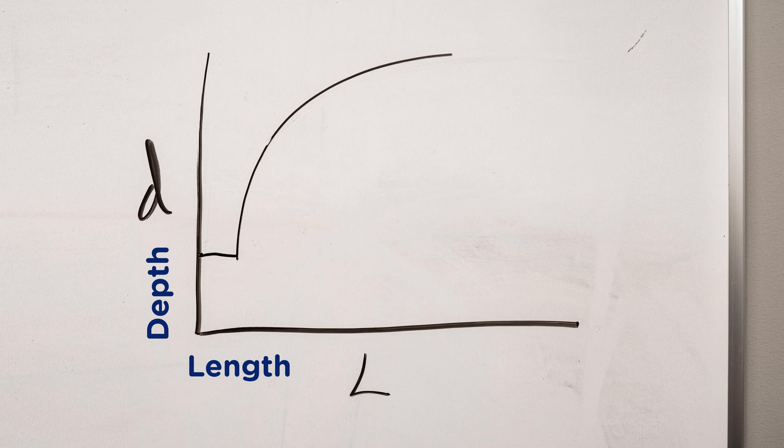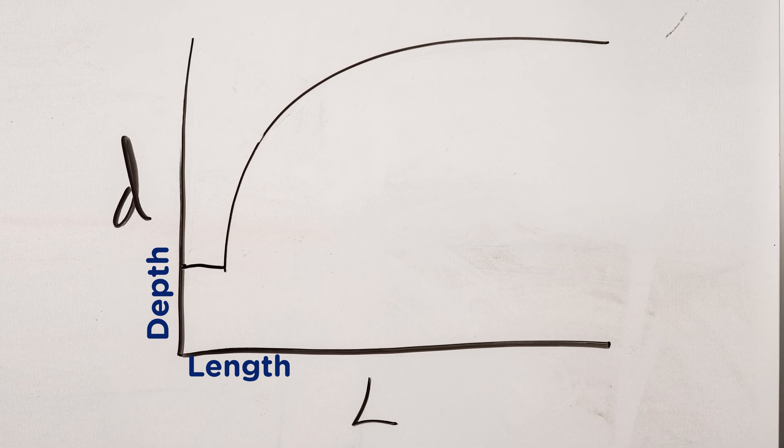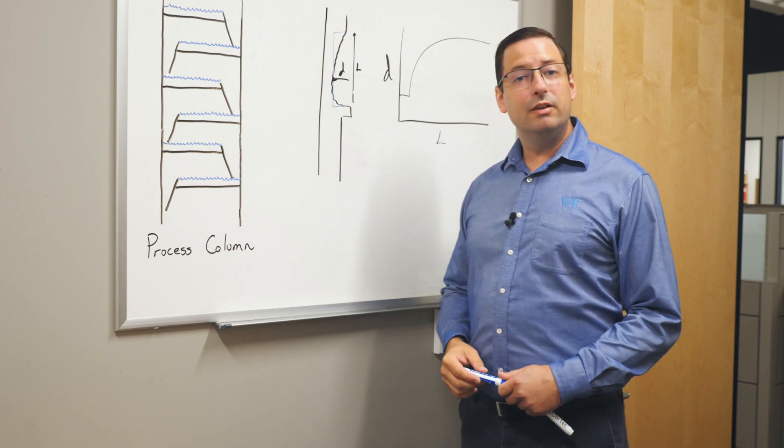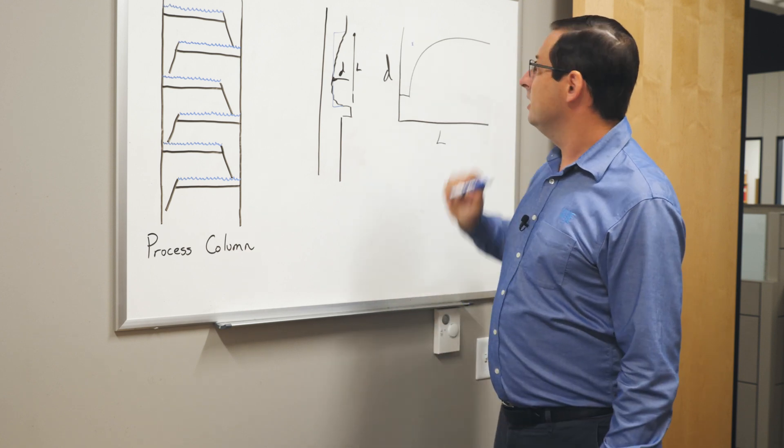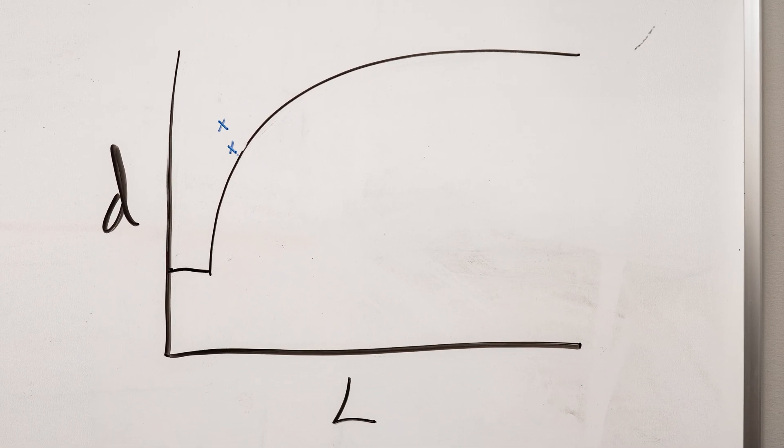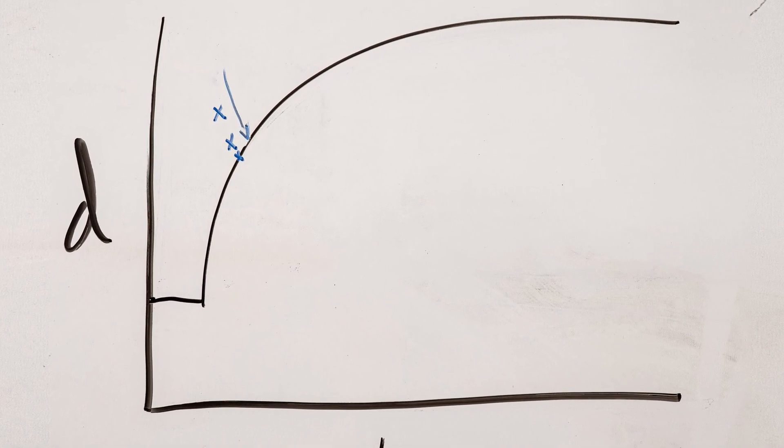The acceptable depth as a function of the length of the corrosion area can be plotted like so. And if we consider that the depth is going to increase over time, what might start as an acceptable point, say here, over time grows in length and grows in depth until we reach the acceptability line.